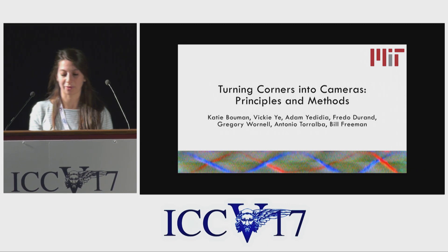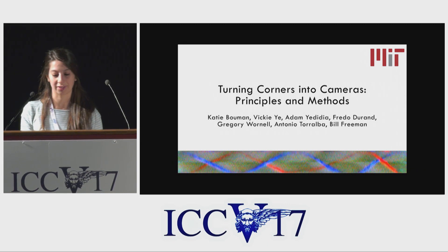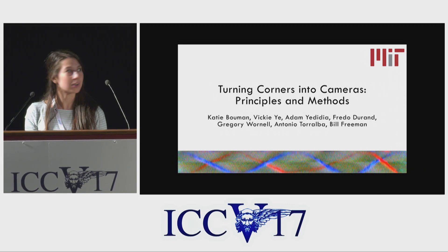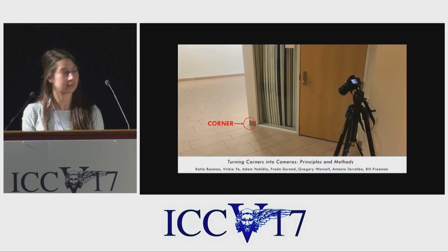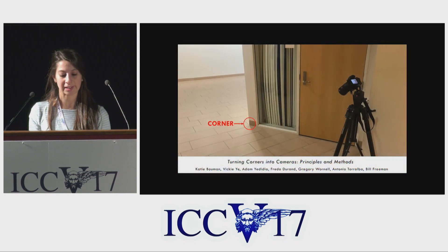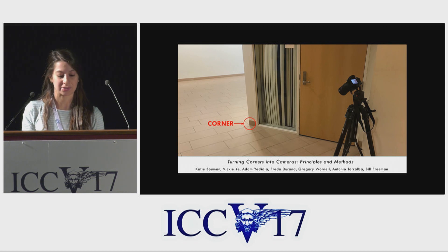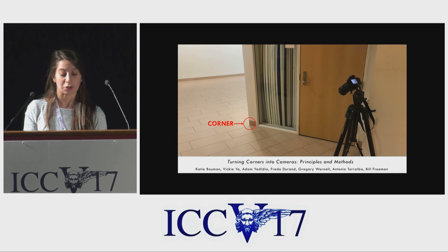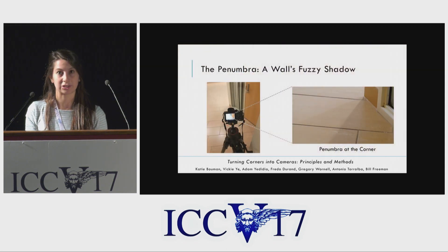The light that we see comes from many different sources, including objects that aren't directly visible to us. For instance, imagine looking at the corner at the base of a wall's edge. Although the wall prevents you from seeing the scene to the right of the corner, you may notice a fuzzy shadow on the ground. This shadow is called a penumbra.